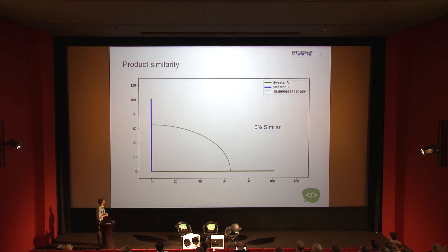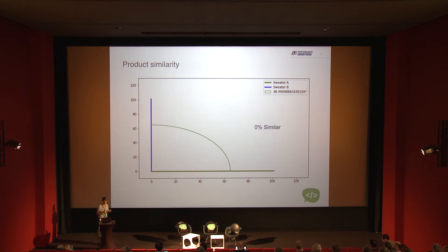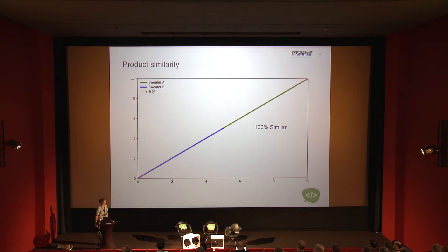If the vectors were perpendicular, the products would be 0% similar. You could also have minus 100% similarity where lines completely oppose each other, but negative values rarely appear in e-commerce. With 100% similarity the lines are identical. It's not about the length of the lines but about how much they match in direction.